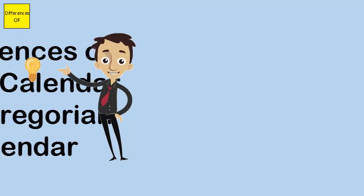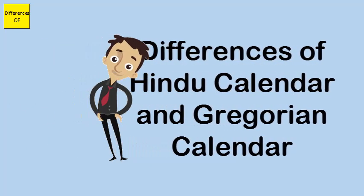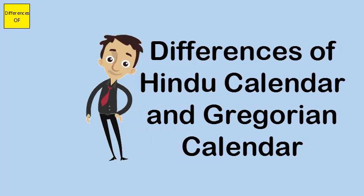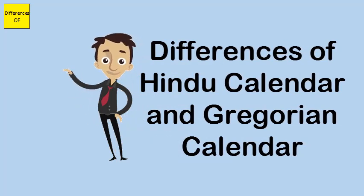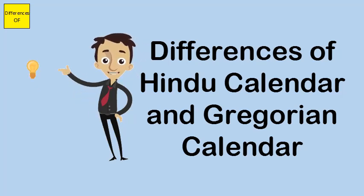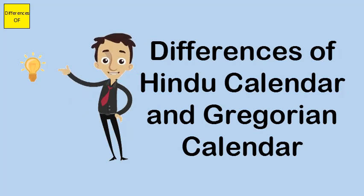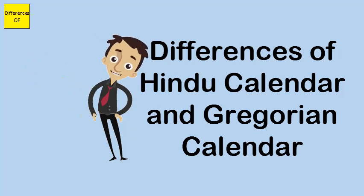The difference between the Hindu calendar and the Gregorian calendar: The Gregorian calendar originated in the 19th century, while the Hindu calendar was invented in the 5th century. The Gregorian calendar has no variations, whereas the Hindu calendar has many variations. The Gregorian calendar is based on Earth's revolution, while the Hindu calendar has the moon's revolution as its base.